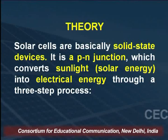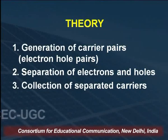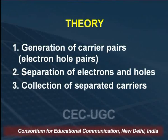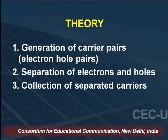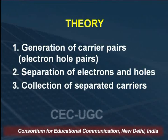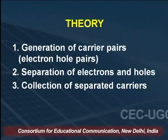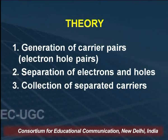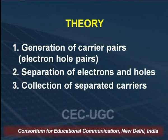What are these three steps? Number 1: generation of carrier pairs — electron-hole pairs are generated. Number 2: separation of the electrons and holes. Number 3: collection of the separated carriers. These are the three steps to study the characteristics of the solar cell.